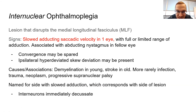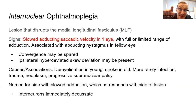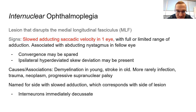INO is named for the slow adducting eye — so a left INO means the lesion is in the left MLF. The sixth nerve does its job fine, but as the signal travels up the midbrain to the third nerve via the MLF, that adduction transmission is slow. You typically will have a skew deviation with that. Think demyelination in young patients and stroke in older patients.